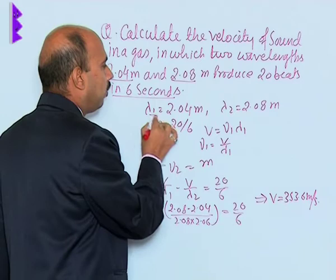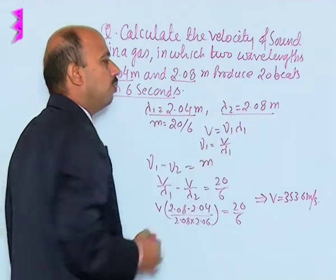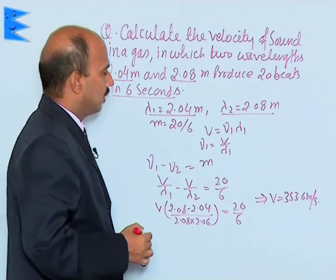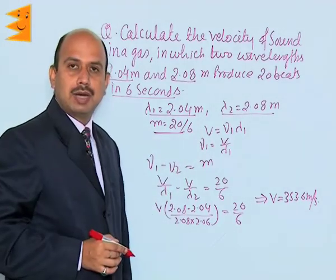We know that lambda 1 is equal to 2.04 meters and lambda 2 is equal to 2.08 meters. Here, m is the number of beats per second, which is 20 by 6.